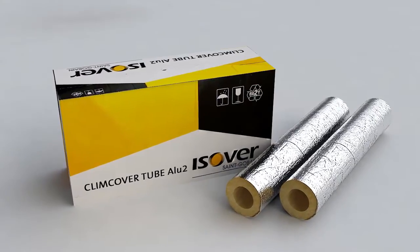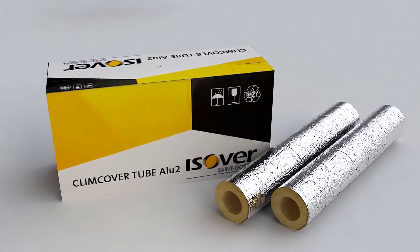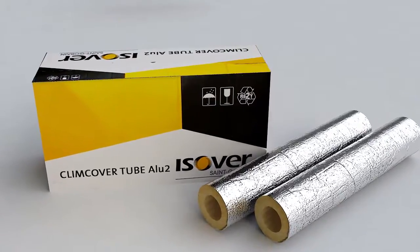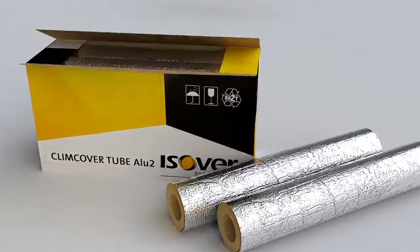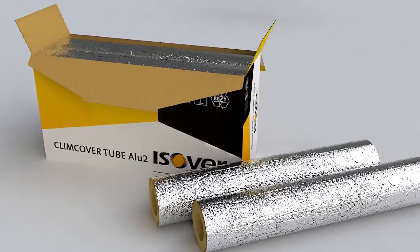Isover Klim Cover Tube Alu 2 is a new solution for the heat and condensation insulation of one family houses. Klim Cover Tube is a slip-on duct insulation made from mineral wool.